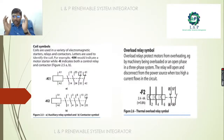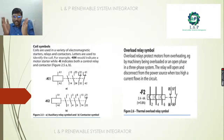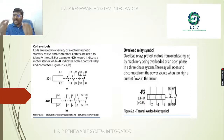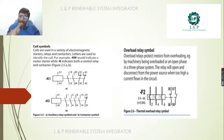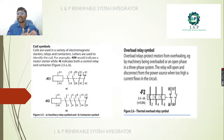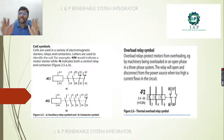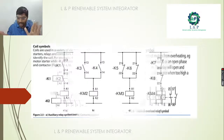There is also a symbol for the overload relay. We need to be very clear about on what condition the relay will indicate overload. What happens is: the relay will open and disconnect from the power source when too high a current flows in the circuit. That is the important function of the thermal overload relay symbol.